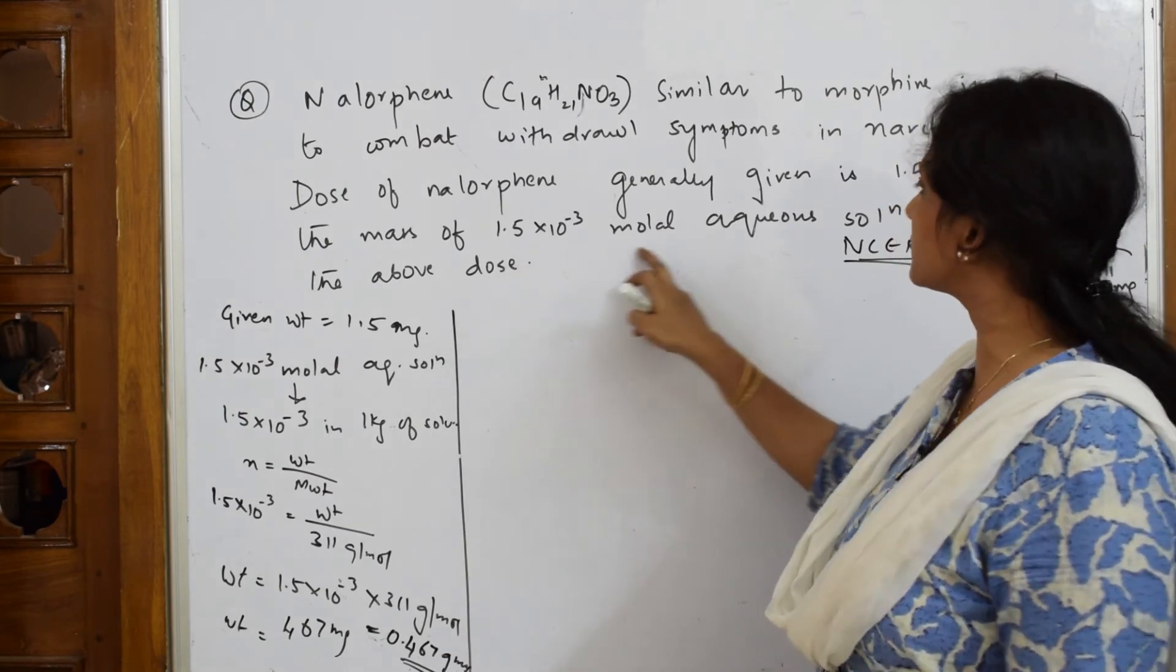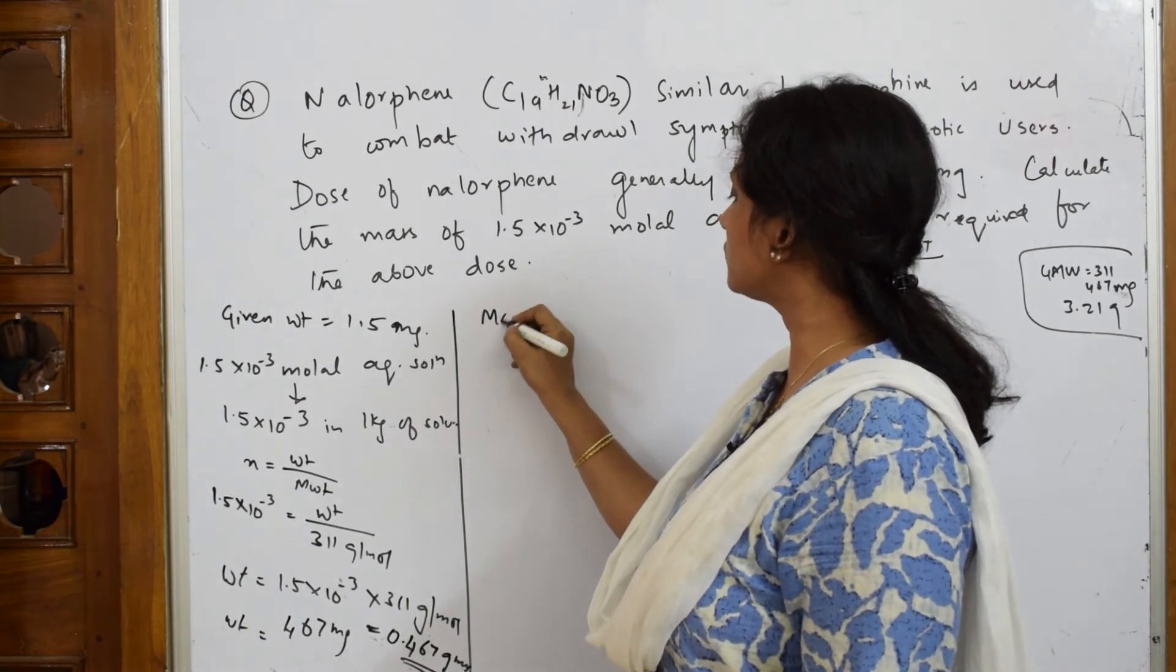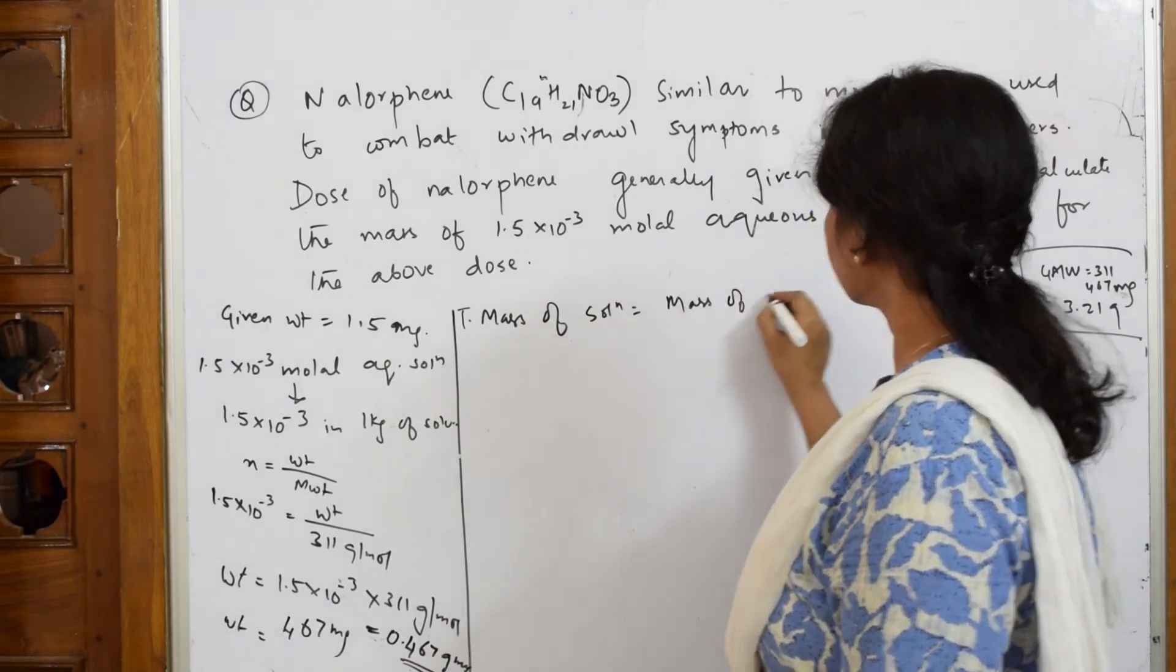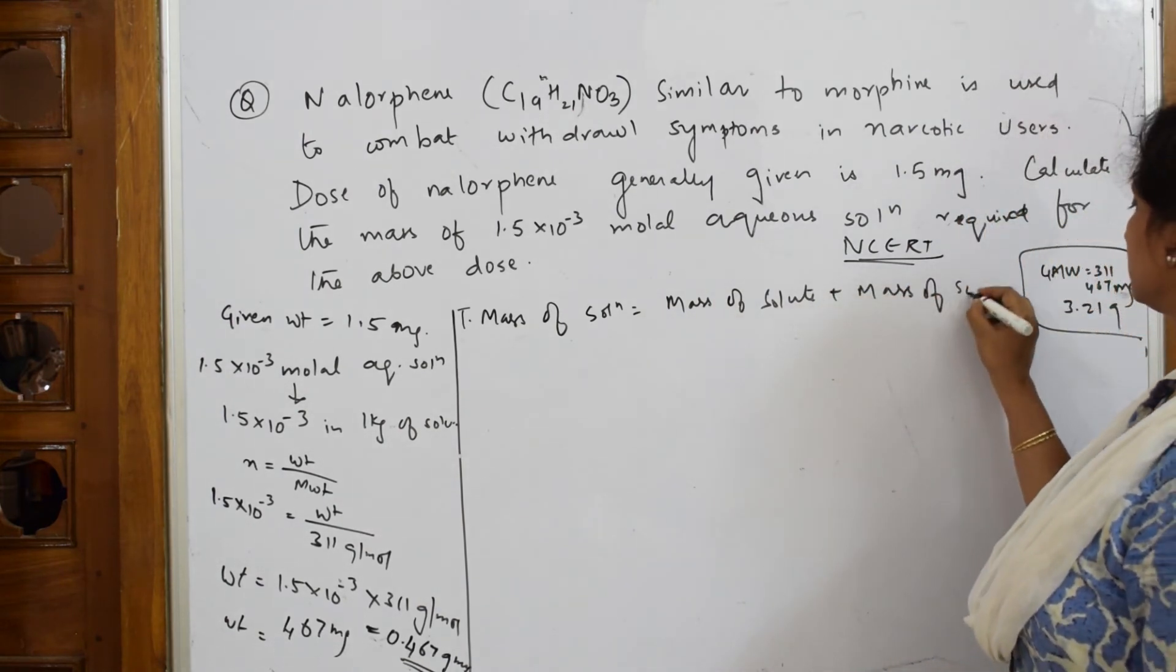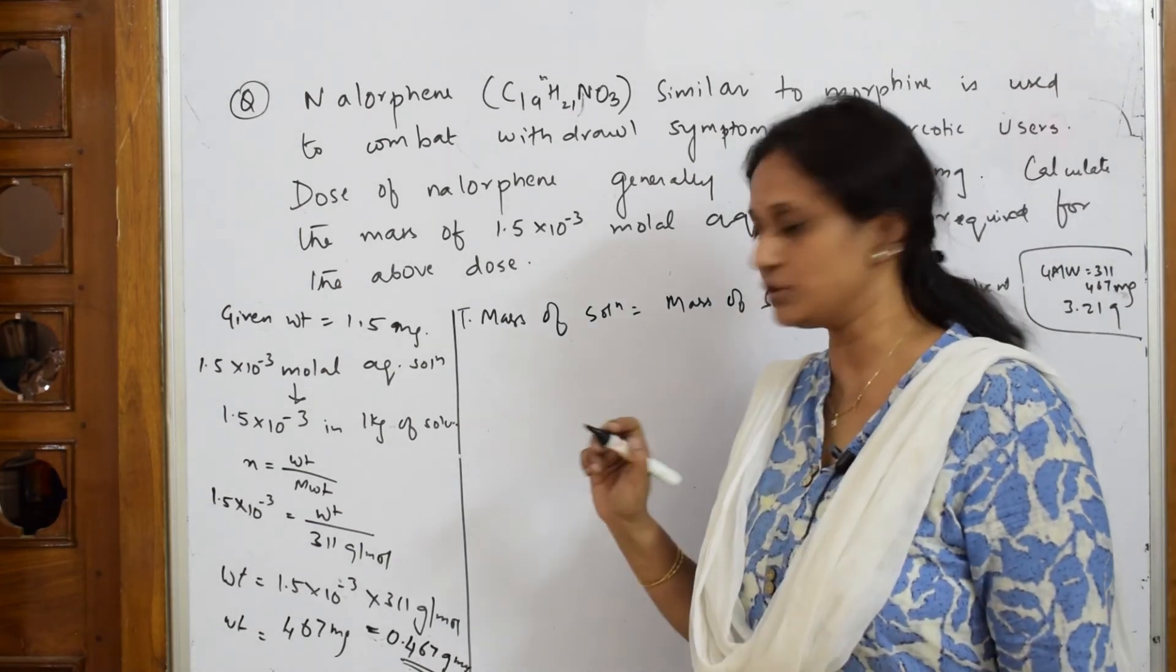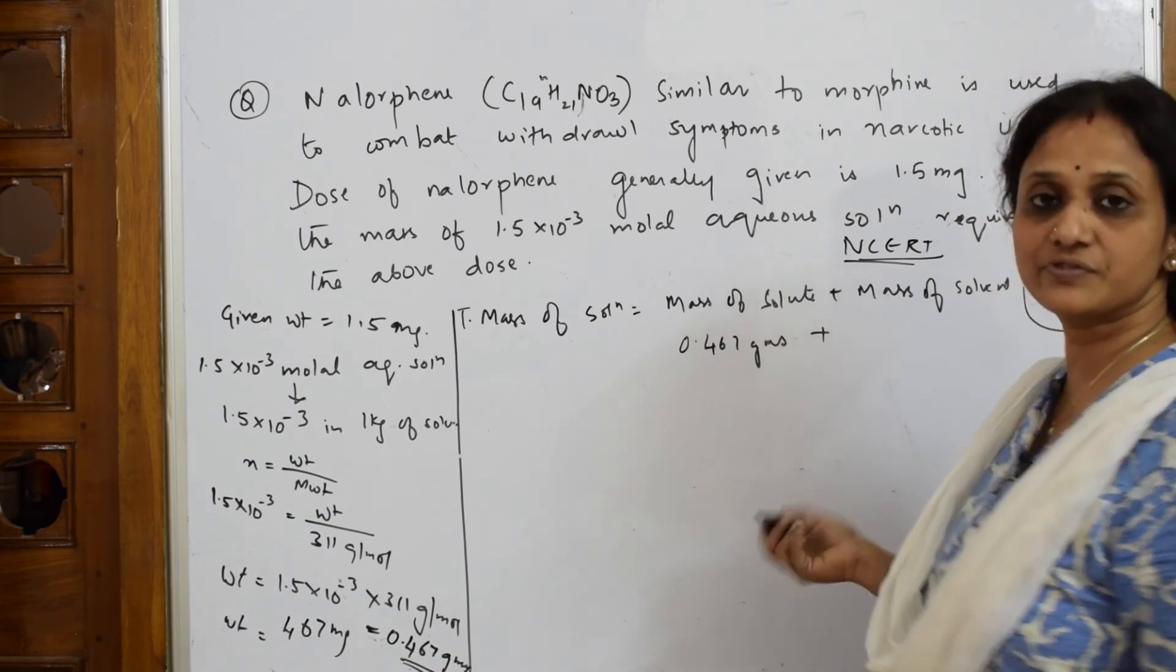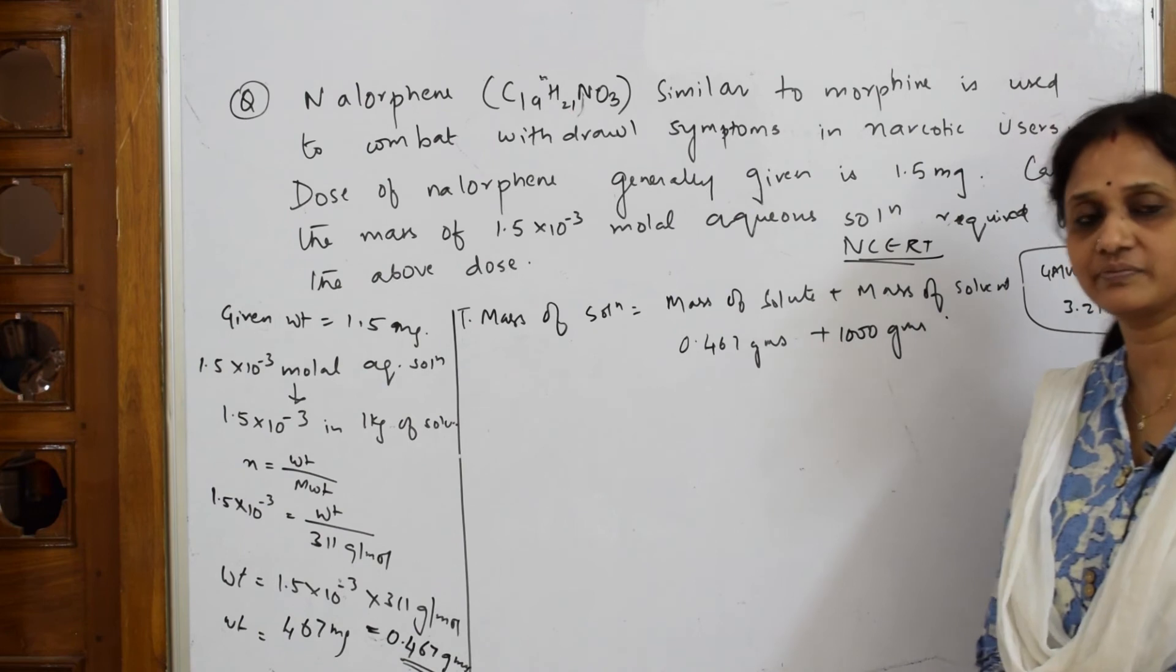This whole thing is presented as molar aqueous solution - the total mass of solution equals mass of solute plus mass of solvent. The mass of solute I just got is 0.467 grams, and the mass of solvent is 1000 grams.